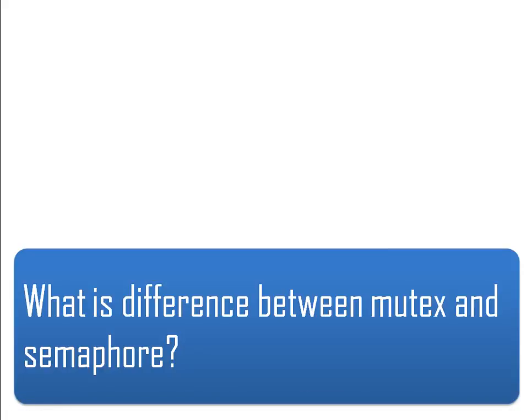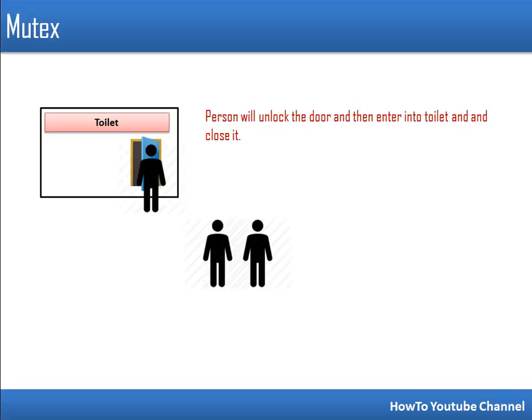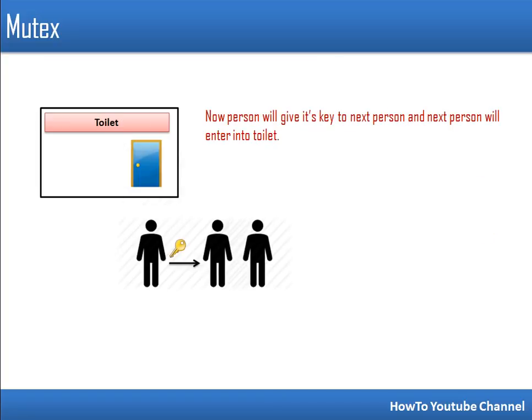In this video I will explain the difference between mutex and semaphore. To show this difference, we are taking a toilet key example. Let's assume we have a toilet and three persons who want to use it. The door is locked and there is only one key, so at a time only one person can own that key, enter, and occupy the toilet. Once done, he will give the key to another person.